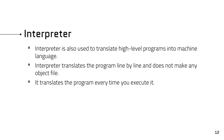An interpreter translates a program line-by-line and does not make any object file. The difference between an interpreter and a compiler is that the interpreter translates line-by-line each time the program runs, while the compiler converts the whole program at once and creates an object file. Because of this, programming languages prefer the compiler.